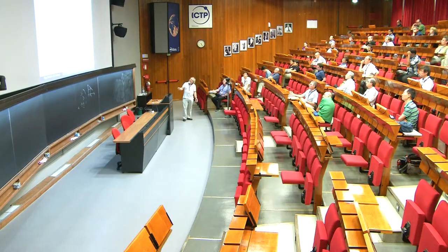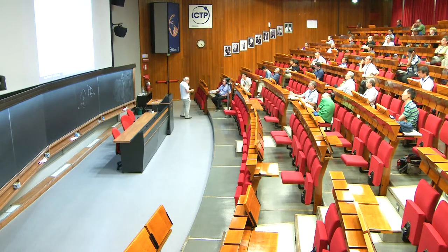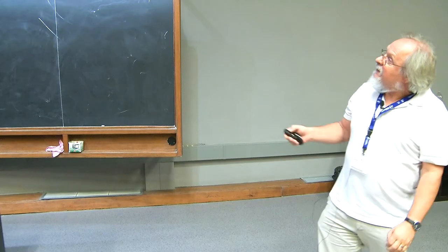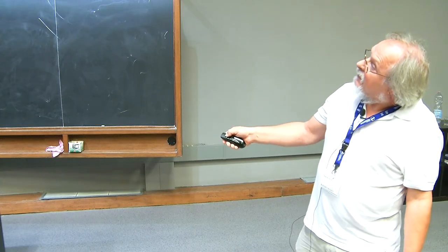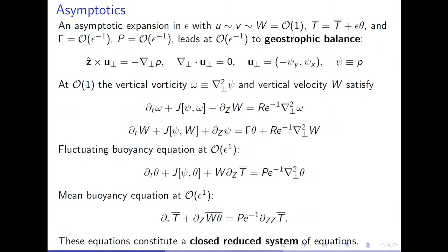I'm going to divide the temperature into a horizontal average part and fluctuations theta. The forcing measured by parameter gamma has to be large — one over epsilon — just to get convection going. The pressure is going to be large also. When I put this into the equations at leading order, I get a balance between the Coriolis force and the pressure, and the flow is horizontally non-divergent, so I can introduce a stream function which is nothing but the pressure.